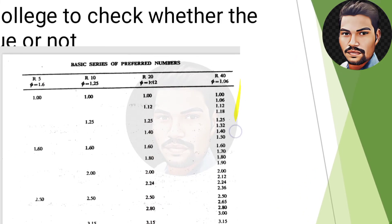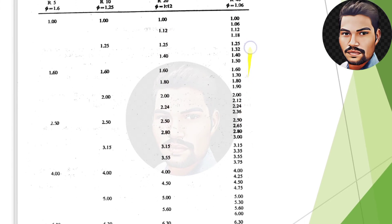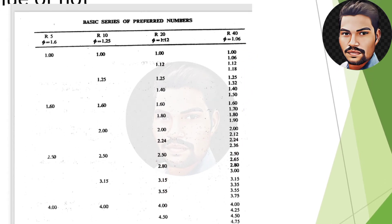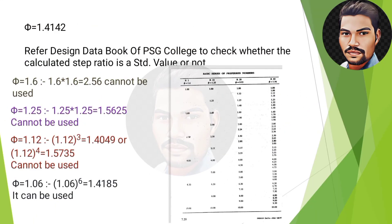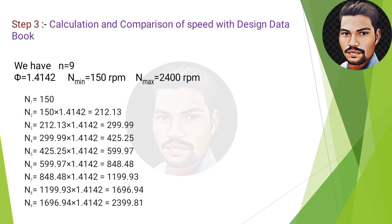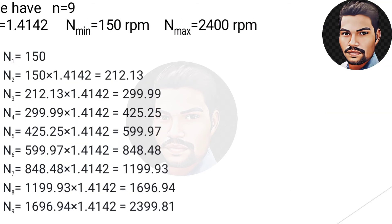Now I will explain how to read and compare calculated speeds against standard speeds. The speeds are calculated on the basis of step ratio 1.4142. My minimum speed is 150 rpm and the maximum calculated speed is approximately 2400 rpm. After calculating, we compare our speeds with the standard speeds from the design data book.